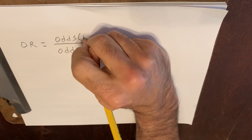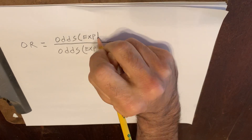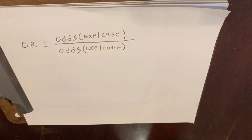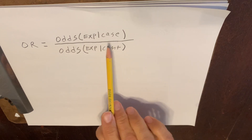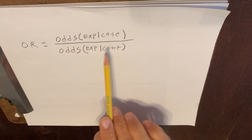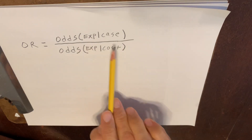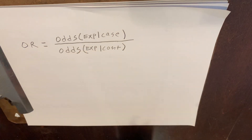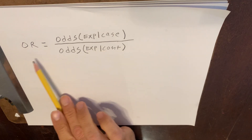In a case-control study — which is where we use the odds ratio — this is the odds of randomly selecting a study subject who was exposed given that he or she was a case, divided by the odds of randomly selecting a study subject who was exposed given that he or she was a control. If there's no differential level of exposure between cases and controls, and these are exactly equal, then under the null hypothesis the odds ratio would be equal to 1.